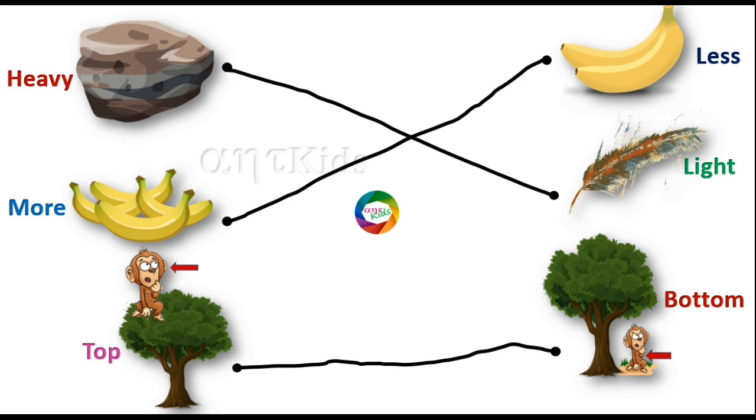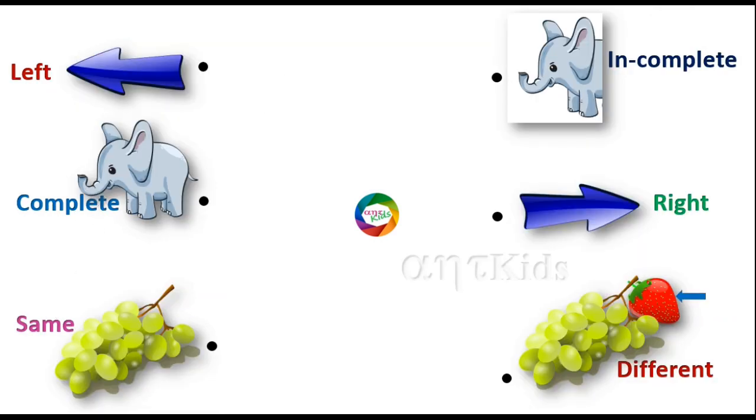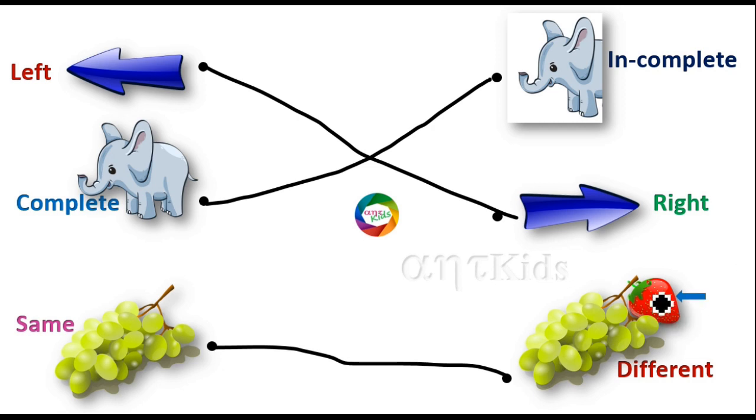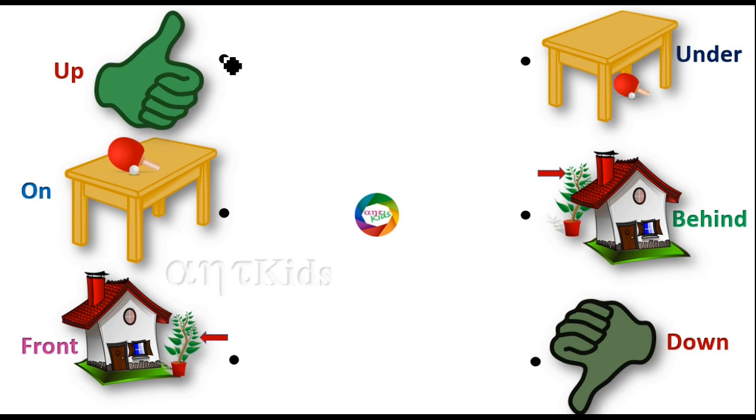Left, right, complete, incomplete, same, different. Strawberry is different from grapes. Up, down, on, under.